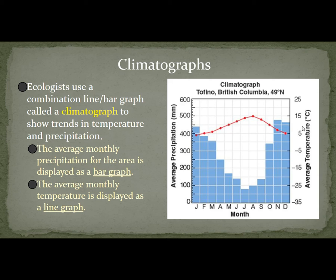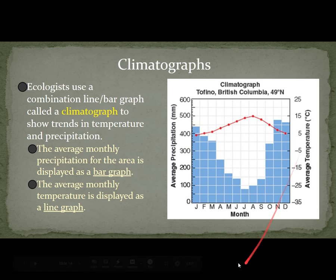Climatographs — this is where we're going to have to do some practice. Ecologists use a combination line and bar graph called a climatograph to show trends in temperature and precipitation. The average monthly precipitation is displayed as a bar graph, and the average monthly temperature is displayed as a line graph.